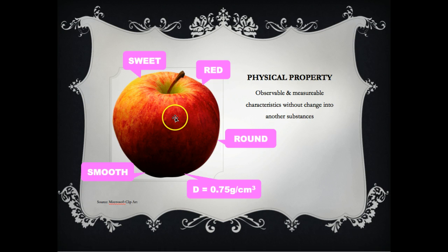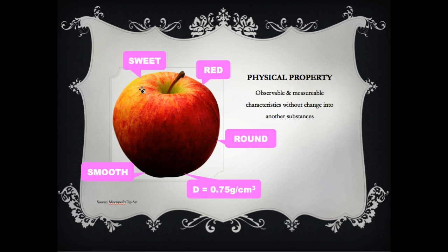I have an example of an apple. Immediately I can tell that this apple is red, it's round. When I rub my hand across it, it has a smooth texture. If I bite it, it has a sweet taste. If I wanted to measure its density, I would calculate the mass divided by the volume — for example, 0.75 grams per cubic centimeter.